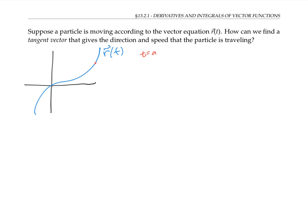Now if I draw a vector whose initial point is at the origin, the tip of this vector is the vector r of a. I want to find the tangent vector at t equals a, which is going to be a vector pointing in approximately this direction, assuming that the curve is being traversed in this direction as t increases.